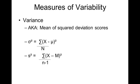So we get a mean, because we're dividing by the number that exists there on the bottom, of the squared deviation scores.